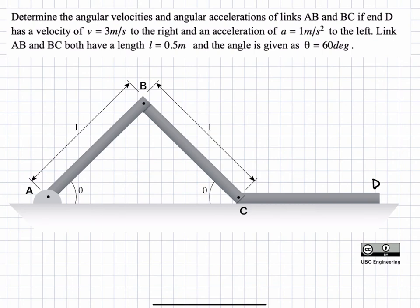In this problem, we have three arms: arm AB, arm BC, and arm CD. Arms AB and BC are free to move, and we're asked to find the angular velocity and angular acceleration of both of these arms. Meanwhile, arm CD is sliding along the bottom surface — we're given the velocity and acceleration of this arm, as well as the dimensions and angle locations.